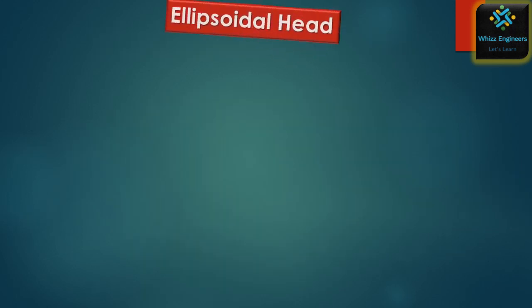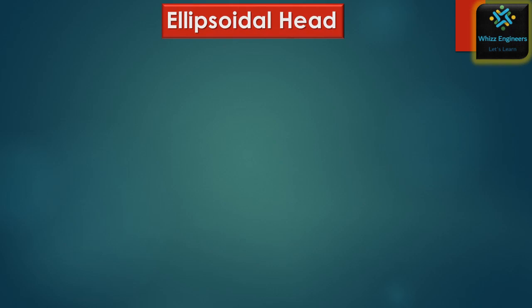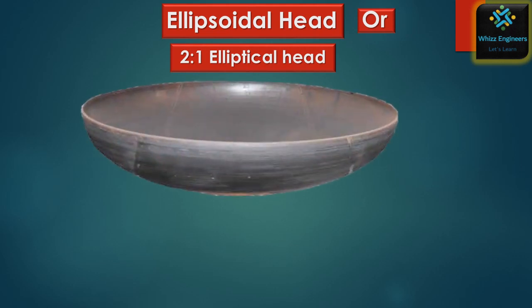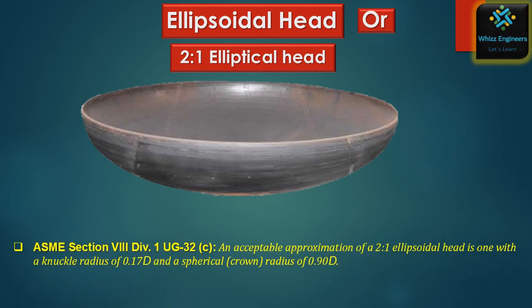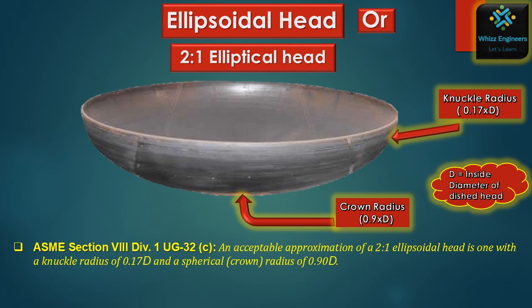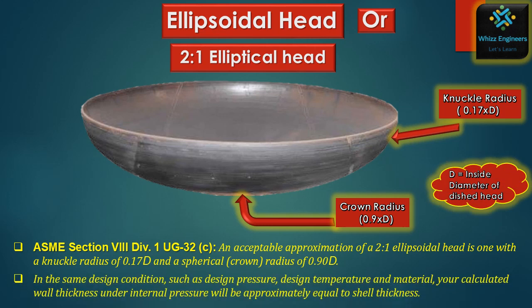The first type is the ellipsoidal head, also called the 2:1 elliptical head. This shape is more economical as the height of the head is just a quarter of the diameter. As per ASME Section 8 Division 1 UG-32C, an acceptable approximation of the 2:1 ellipsoidal head is one with a knuckle radius of 0.17D and a spherical radius of 0.90D. If the thickness is calculated as per the design condition of the shell, it will be approximately equal to the shell thickness.